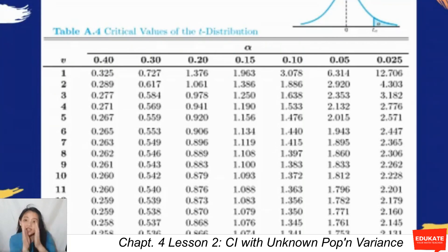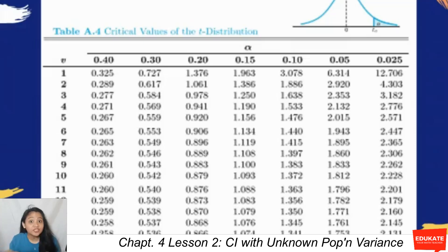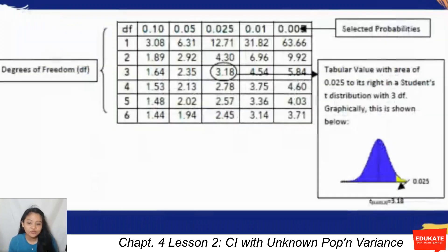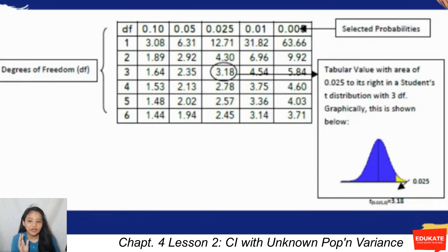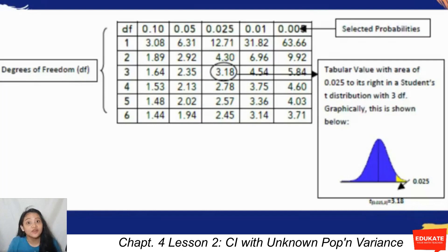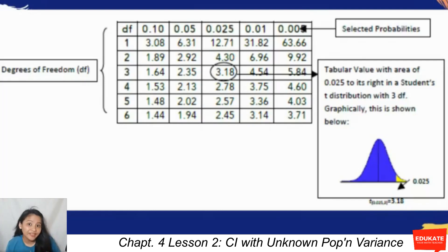The t-table has columns for the alpha level of significance and rows for the degree of freedom. The numbers inside are your t-values. For example, with a selected probability of 0.025 and a degree of freedom equal to n minus 1, which is 3, the tabular value is 3.182.